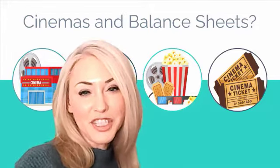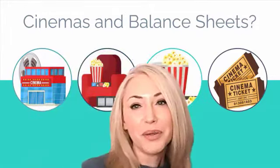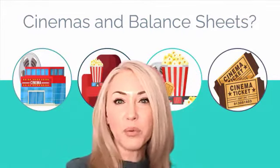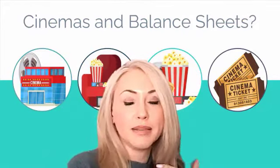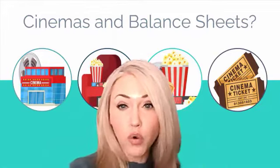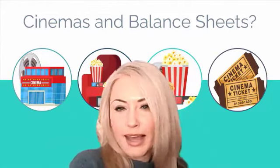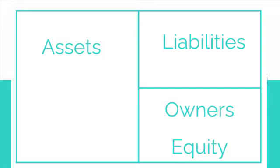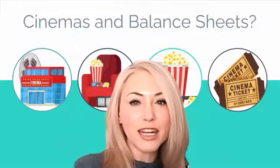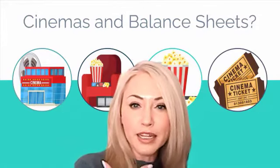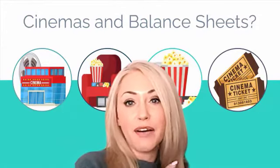Let's talk about balance sheets and the movies. A lot of times whenever you hear balance sheets explained, it's explained in a really abstract way. You might have heard it described as something that your company owns and owes, and you've probably heard these very abstract categories like assets, liabilities, and owner's equity. What we're going to do in this video is actually try to make some of those concepts a little bit more concrete by applying it to an example of a movie theater.